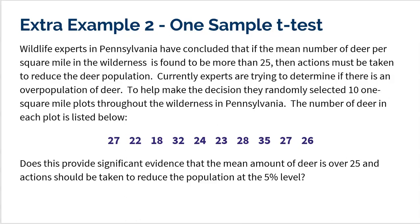All right, let's look at our second example here. This is a one-sample t-test as well. Wildlife experts in Pennsylvania have concluded that if the mean number of deer per square mile in the wilderness is found to be more than 25, then actions must be taken to reduce the deer population. You know, sometimes when the deer population gets too big, wildlife experts need to reduce that population or it could actually cause harm. So currently experts are trying to determine if there is an overpopulation of deer. So they're trying to determine, do we have more than 25 deer per square mile? Because if there is, there's a problem.